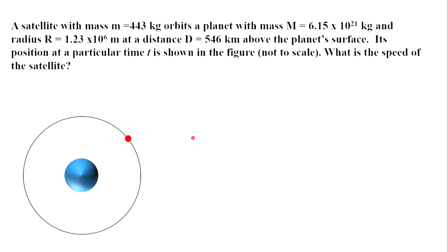In this video we consider a satellite with given mass which orbits a planet along a circular path. Mass of the planet, its radius, and a distance of the satellite from the planet's surface are given.